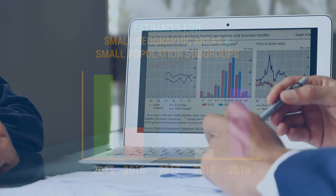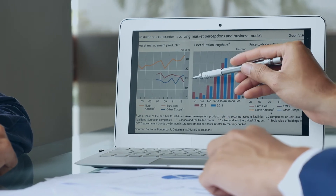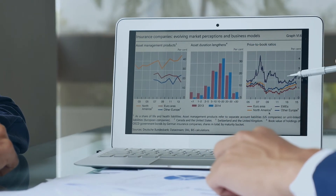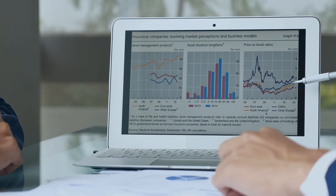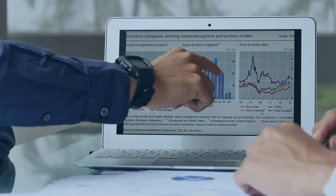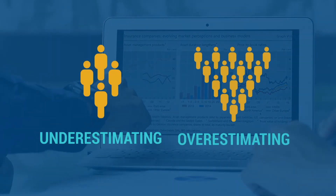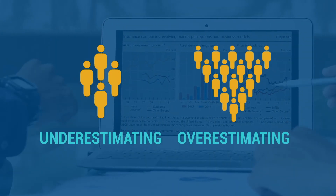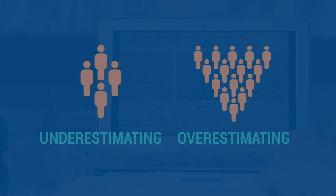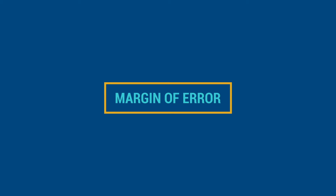Likewise, if analysts outline needs for policy or program development without considering whether estimates are reliable, it can lead to under- or overestimating the target population. The Census Bureau provides margins of error, or MOEs, for ACS estimates to help users understand the impact of sampling error on data reliability.